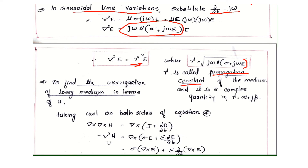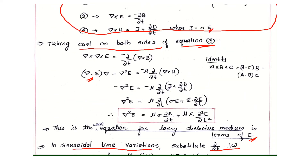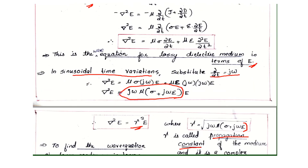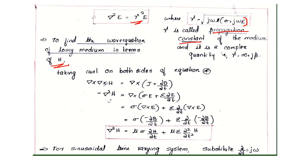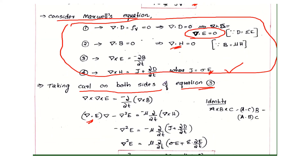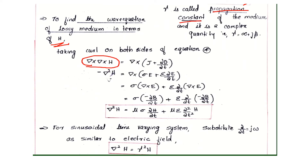To find the wave equation of the lossy medium in terms of H, we consider the fourth equation: del cross H equals J plus partial D by partial t. Taking the curl on both sides gives del cross (del cross H) equals del cross (J plus partial D by partial t). Applying the vector identity: del(del·H) minus del squared H. Since del·H equals 0 by the second equation, this reduces to minus del squared H. So del squared H equals del cross J plus sigma E, partial by partial t.